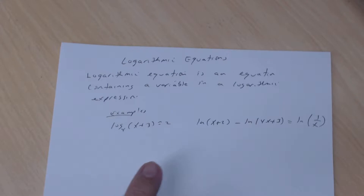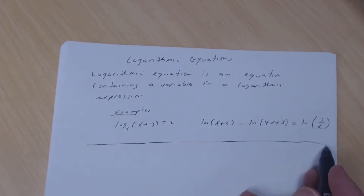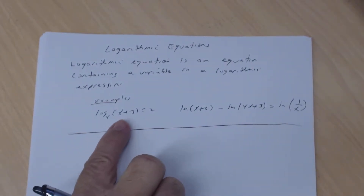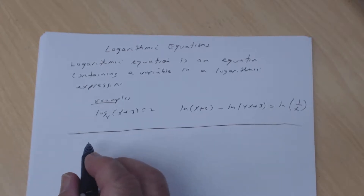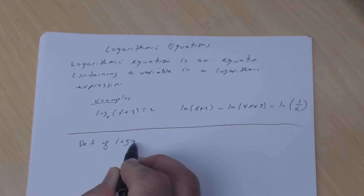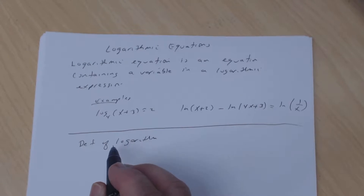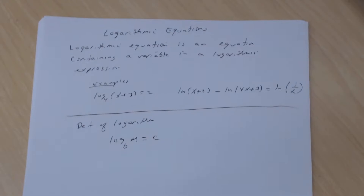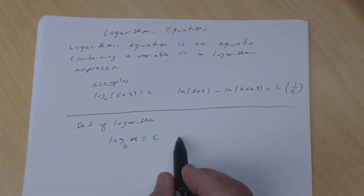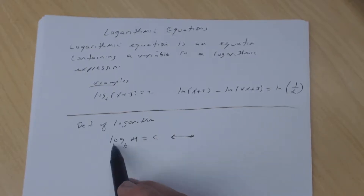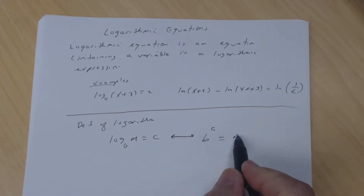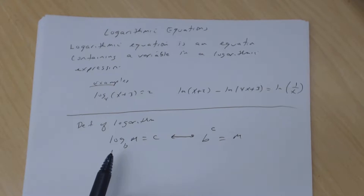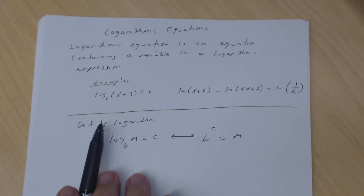Now, you want to solve for the variable x. One of the properties you're going to use is the definition of a logarithm. Remember: if you have the log base B of M equals C, then the equivalent exponential form is B to the C power equals M. A logarithm is an exponent. You'll use this definition to solve log equations.